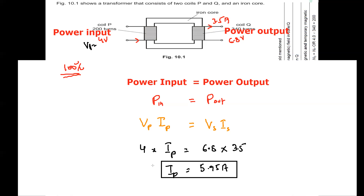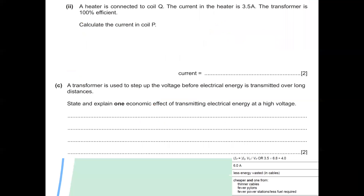In a step up transformer, the secondary has more voltage and less current, while the primary has less voltage and more current — consistent with 5.95 amperes in the primary. Regarding transmission: a transformer steps up the voltage before electrical energy is transmitted over long distances. At high voltage there is less current, so less heat is produced and thinner, cheaper cables can be used.